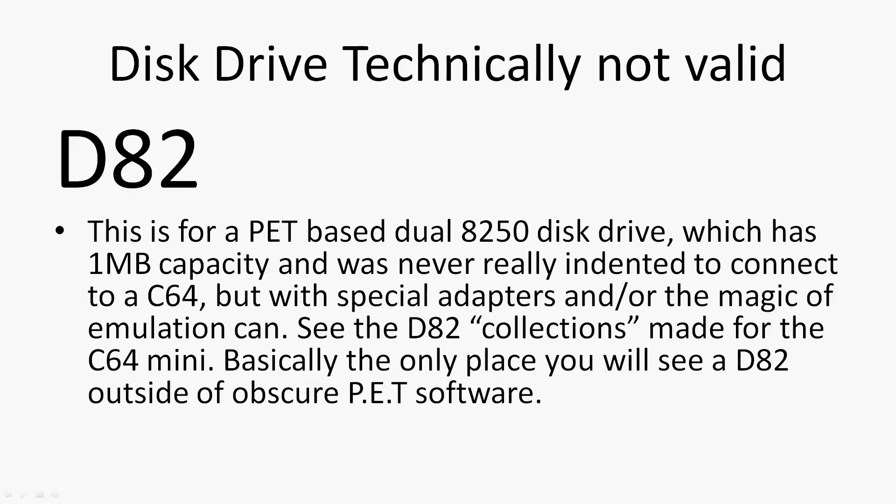D82 is the PET's 8250 dual disk drive. This won't connect to a C64 normally and needs a special adapter. However, thanks to the magic of emulation it works like any other drive — you can get one megabyte per disk. These are mostly only used in special C64 mini compilation disk images that have been made.